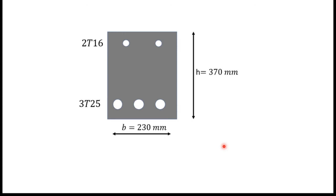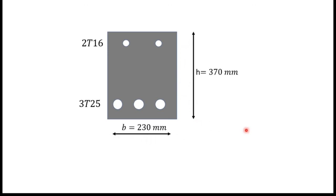The final cross-section shows 2T16 bars as compression reinforcement at the top of the beam, and 3T25 bars as tension reinforcement at the bottom of the beam. The beam width is 230 mm and height is 370 mm.